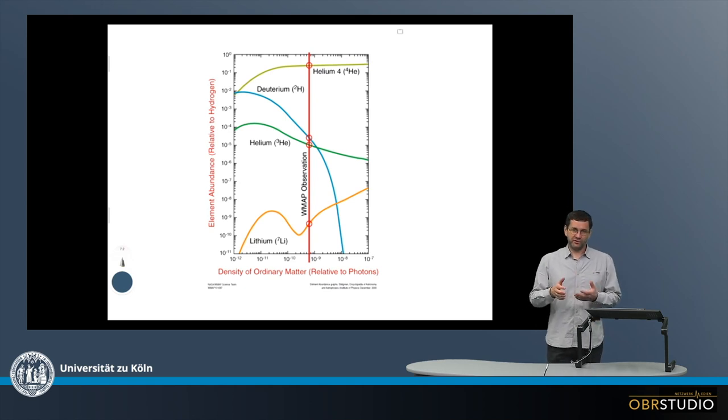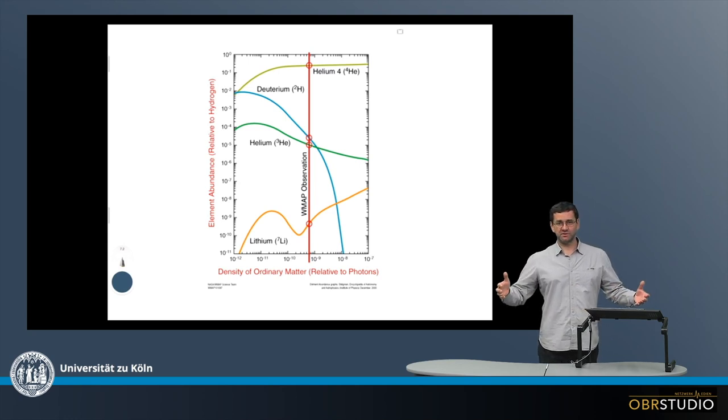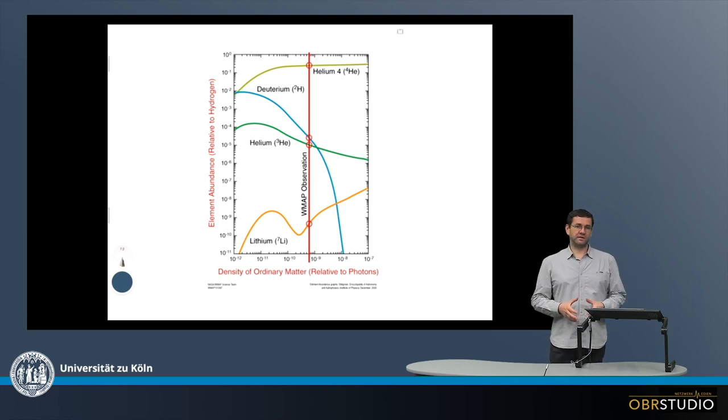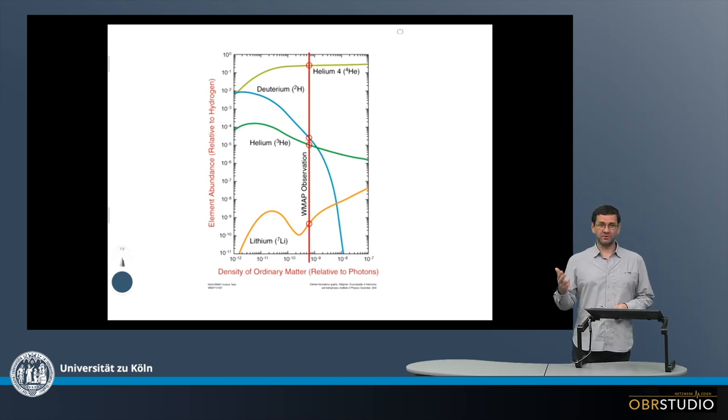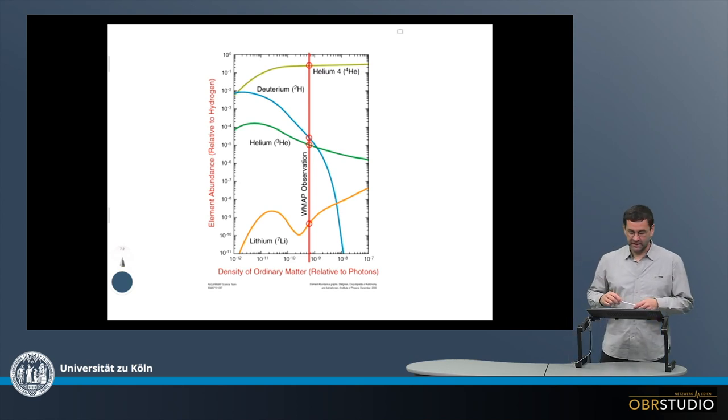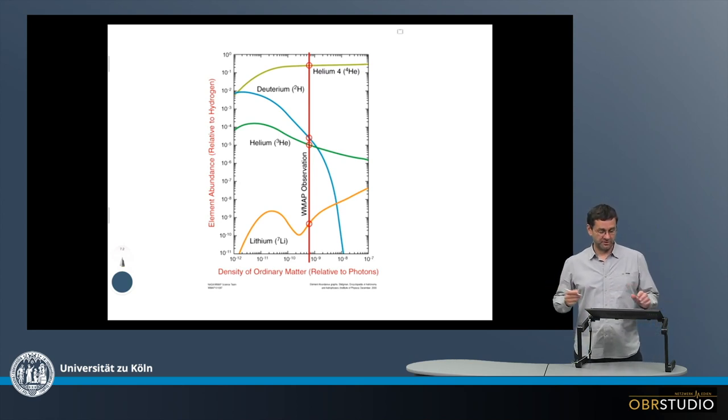Then there were a couple of further collisions that formed traces of lithium. But after that, the expansion was so fast and space was so big already that collisions were inefficient to produce further elements during this very early stage of the Big Bang. This is why during the Big Bang three elements formed, or actually more or less only two, hydrogen and helium, and very little traces of lithium.